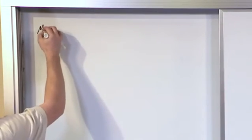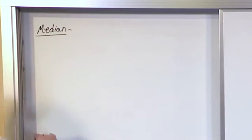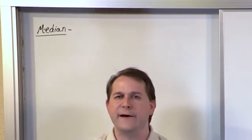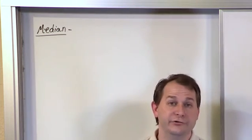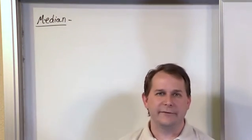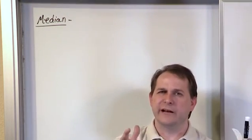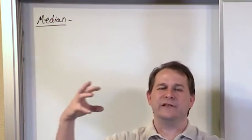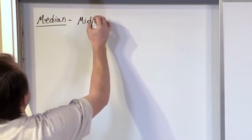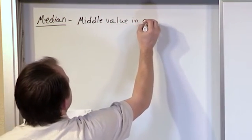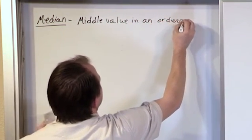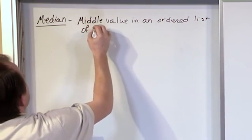So we have a couple of other ways to look at a representative number for the rough center of a data set. One of them is called the median — you might have heard this before, especially when they talk about incomes. Usually they don't say the average income of everybody in Houston, Texas is such and such; they say the median income is such and such. Because you're always going to have some people that are extremely poor and some that are extremely rich, but most people fall in the middle section. You don't want to average in those outliers — you want to calculate the median, which is defined to be literally the middle value in an ordered list of data.